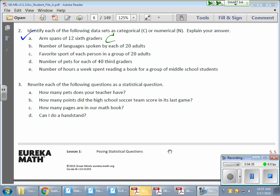Part B: Number of languages spoken by each of 20 adults. Excuse me, I put categorical, that should be N, sorry, numerical. This is N for numerical because the data is going to be arranged using numbers - the number of languages spoken by 20 adults could be three or two or one. It's numerical by nature.